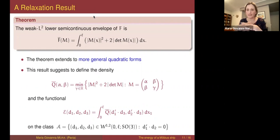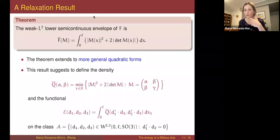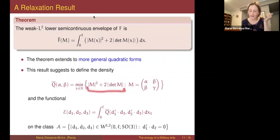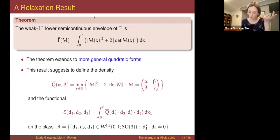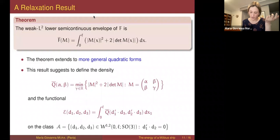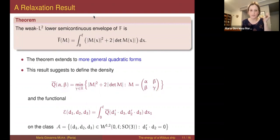We are dealing with a sequence of scaled curvature tensors — matrices with zero determinant converging weakly. We expect this relaxation process to occur, and so at the end we should see this function appear. In our case, M will be the limiting curvature tensor: the entries denoted α and β are related to curvature and torsion, while γ is the entry we cannot identify in terms of the directors. The idea is to look at the function that should arise because of the determinant-equal-to-zero constraint, minimize over γ, and this provides a function of two variables α and β.